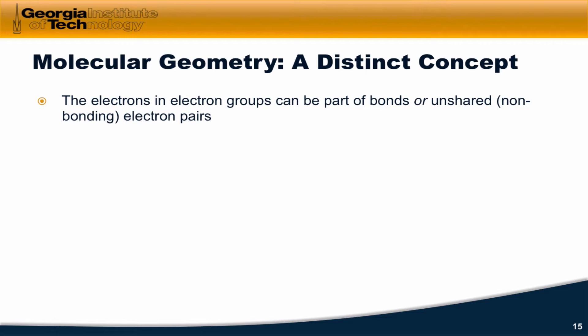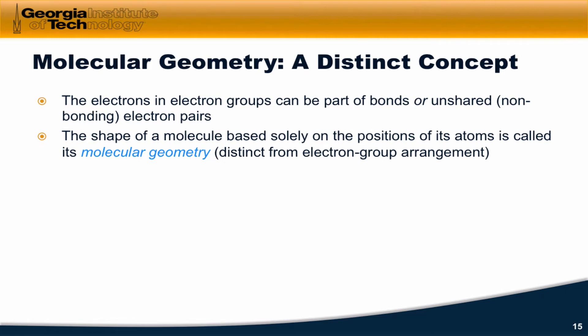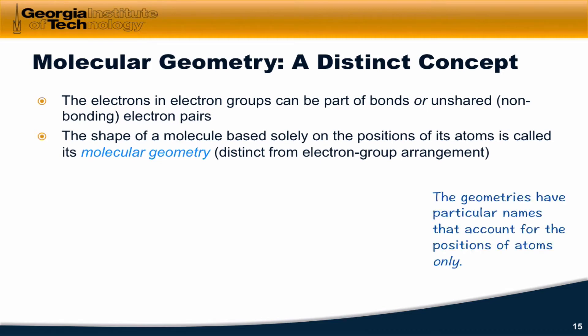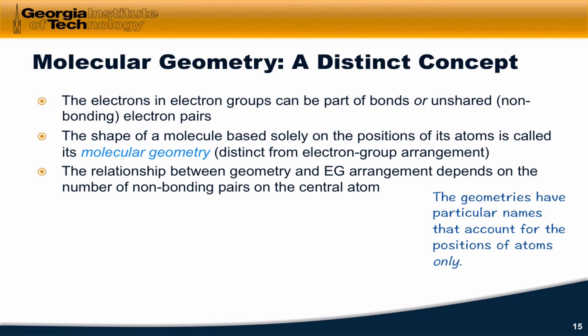The electrons within electron groups can be part of bonds — bonding electrons — or they can be unshared or non-bonding electron pairs. When we don't account for the non-bonding electron pairs and we pretend they're not there and look at the geometry of the atoms within the molecule, we get what's called the molecular geometry. The specific molecular geometries have particular names that account for the positions of atoms only. The relationship between molecular geometries and the electron group arrangement depends on the specific numbers of non-bonding lone pairs on the central atom and bonding pairs.